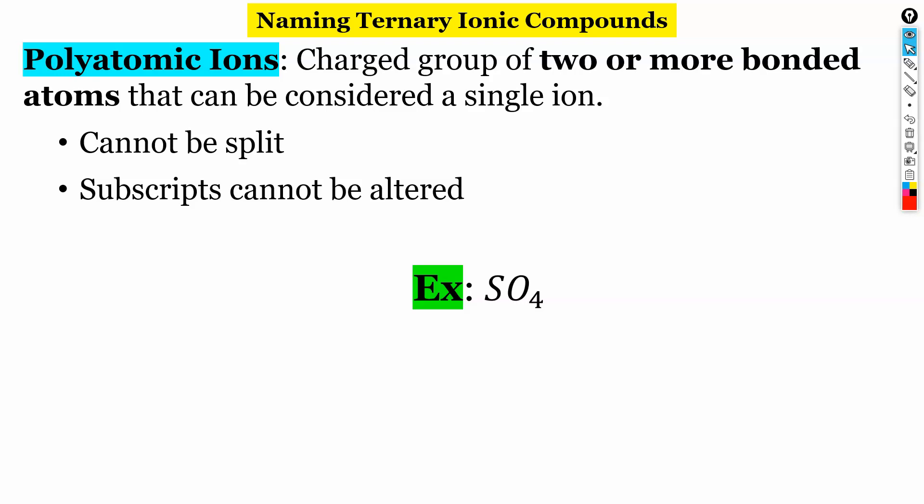In this video, we're going to do naming and formula writing for ternary ionic compounds. First thing we need to do is define a polyatomic ion. So a polyatomic ion is a charged group of two or more bonded atoms that can be considered a single ion.